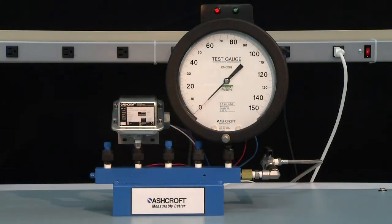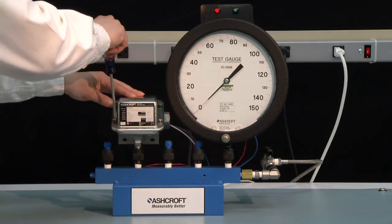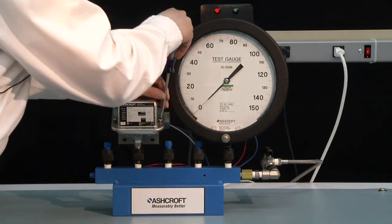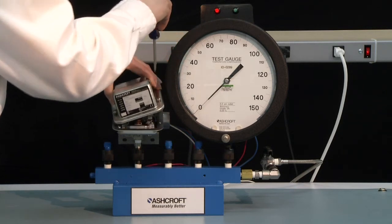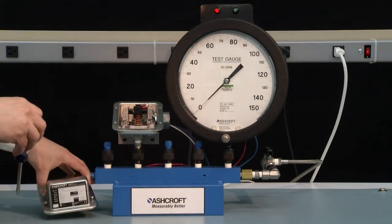Now we're going to set a G series switch with a decreasing set point. The G series is like the L series in its mechanism and the big difference is the case material. The G series is a 316L case. So the first thing we will do is remove the cover.